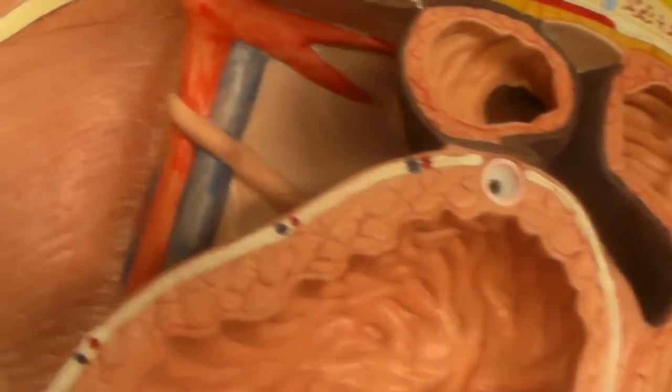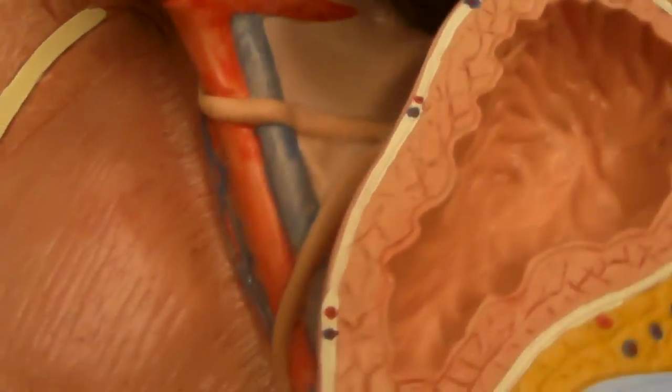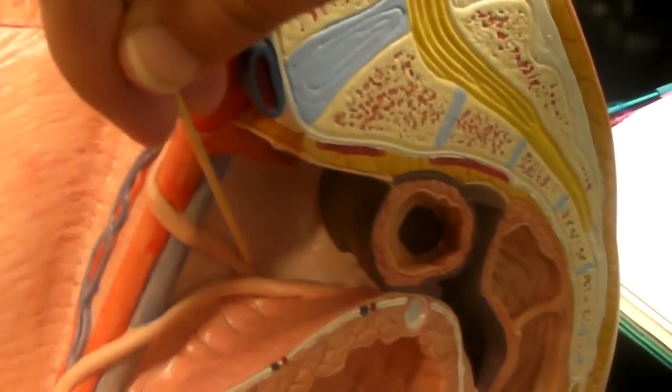Did you get where the ureter comes in? I did, but it was this way. So it's going to come from up top. This is the ureter right here. It comes around and goes into the bladder.